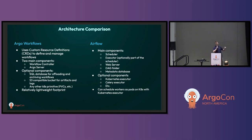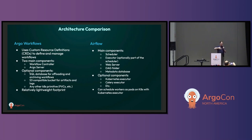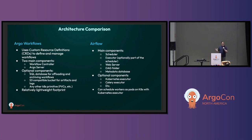Let's compare the architectures quickly. Argo Workflows uses custom resource definitions to define and manage workflows. If you're used to CRDs, Kubernetes deployments, things like that, you should be familiar with how to interact with Argo Workflows. There are two main components: the workflow controller and the Argo server. There are also optional components you can add on, like a SQL database for offloading and archiving workflows, and S3 for artifacts and logs. You can tack on any other Kubernetes primitive — if it's Kubernetes, it works well with Argo Workflows — and it has a very lightweight footprint.